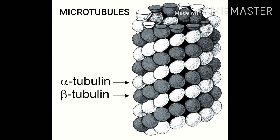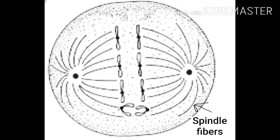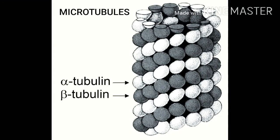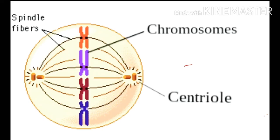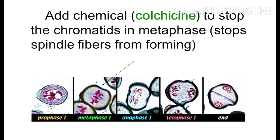Microtubules are present in those structures which are involved in cell division. As you know, centrioles and spindle apparatus are very important for cell division, so microtubules also take part in cell division by forming spindle fibers. Spindle formation is a very important step in cell division — if there is no spindle formation, then cell division cannot occur, and for spindle formation these microtubules are very important. There is a chemical called colchicine which can prevent the assembly of microtubules and also prevents spindle formation, thereby stopping cell division.